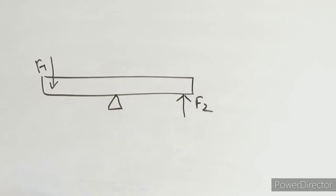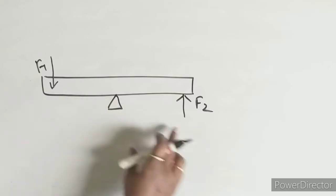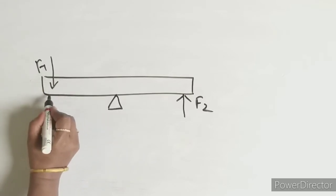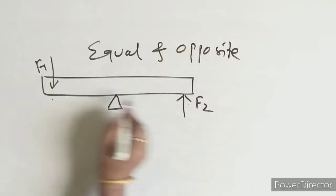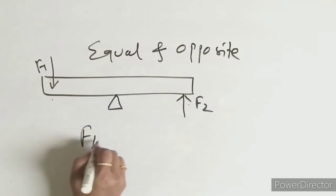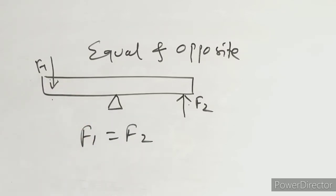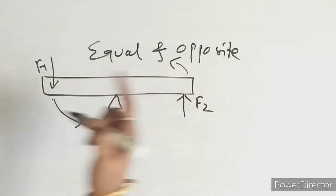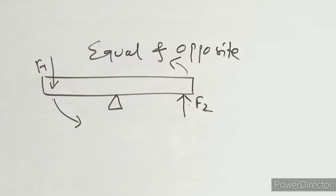We are talking about equal and opposite forces, meaning their magnitude is the same: the magnitude of F1 is equal to the magnitude of F2, but they are in opposite directions. Each of the forces exerts a turning effect in the same direction. If the body starts rotating clockwise, both forces contribute clockwise rotation. If anticlockwise, both contribute anticlockwise. They do not cancel each other, so the body experiences rotational motion.